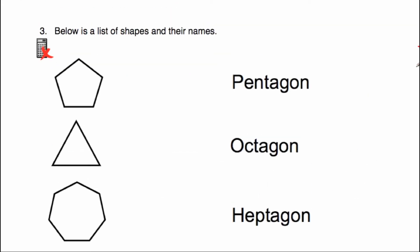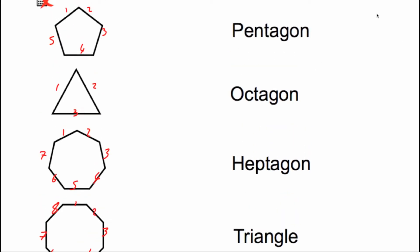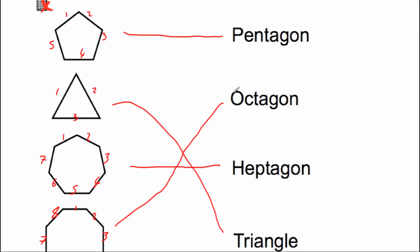Question number three: below is a list of shapes and their names. We've got a pentagon with five sides, a triangle with three sides. The next shape has one, two, three, four, five, six, seven sides — that's called a heptagon. And finally an octagon with eight straight sides. We join them up: pentagon matches that one, triangle matches that one, heptagon goes there, and the octagon matches up with that one.